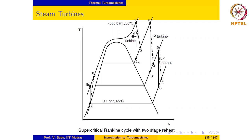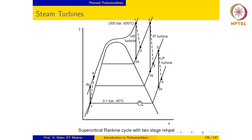The boiler pressure at state one is 300 bar, 650 degrees Celsius, and the condenser pressure in this case is 0.1 bar, which is usually the case in most steam power installations.